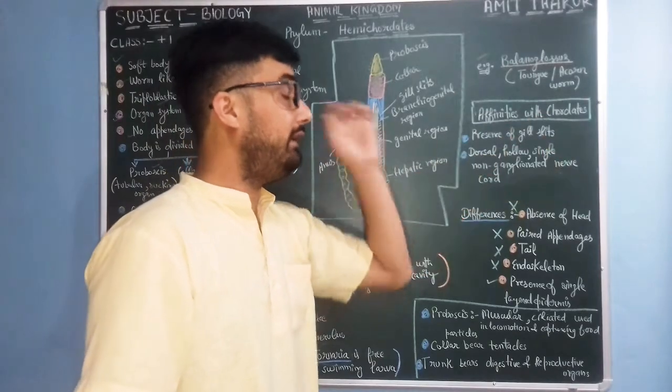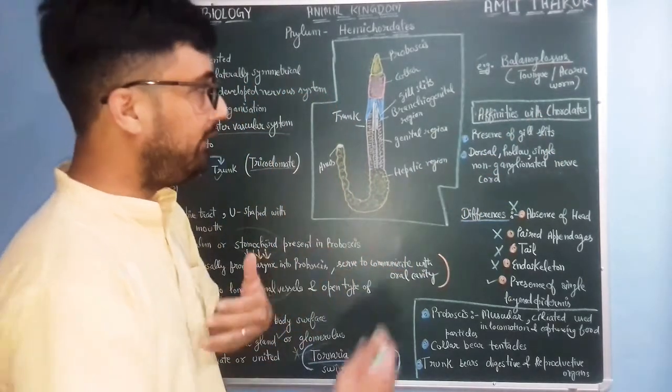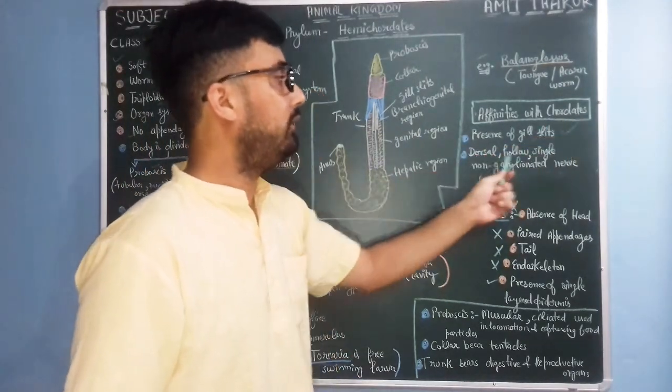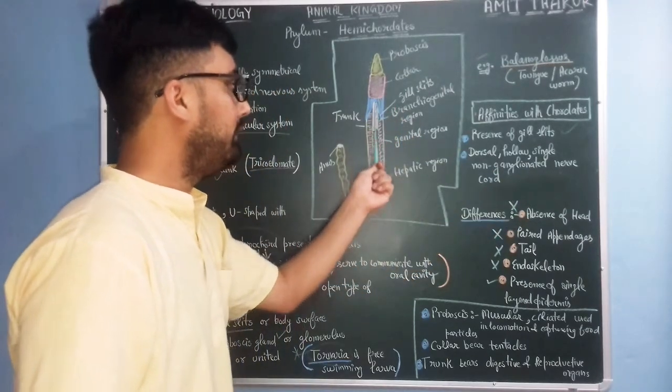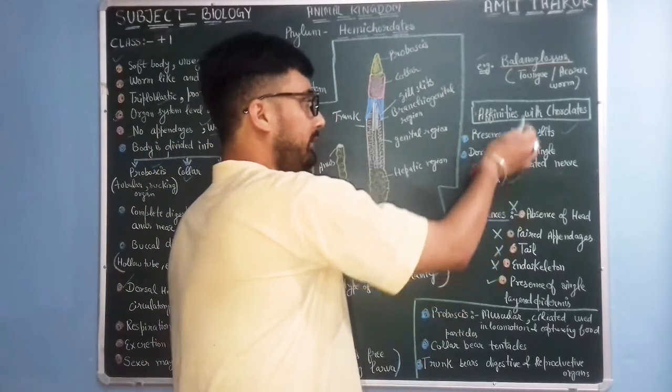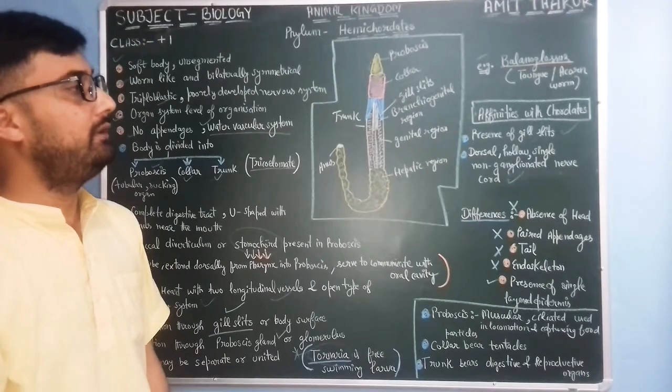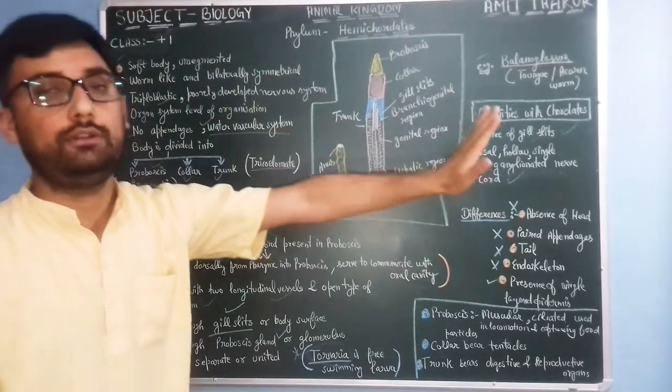Affinities with chordates: how hemicordates connect to chordates. Presence of gill slits, dorsal hollow single non-ganglionated nerve cord. You can see, these are the features which connect hemicordates with chordates.